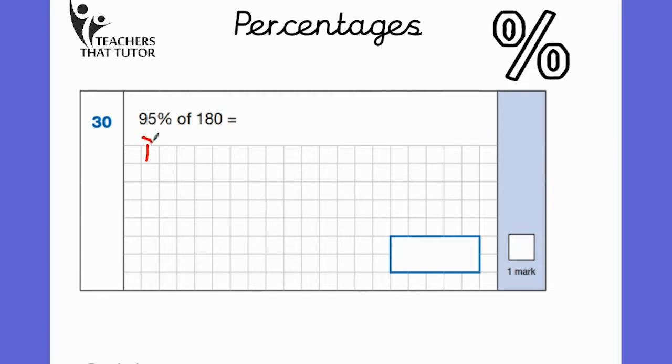Step one would be to multiply these numbers together, so we're going to do 95 times 180. This question is asking us to find what 95% of 180 is. So we'll put 180, the big number on top, and we'll put 95 underneath.